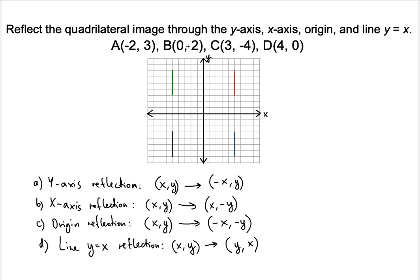This example requires a quadrilateral — not just a line segment or even a triangle, but a more complicated figure. It will be harder to see reflections with this particular example. I wanted to show you how reflections work so you get an idea of what it is. So now that we've shown that, let's plot the given quadrilateral. We have 4 points, 4 vertices, because this is a polygon with 4 sides.